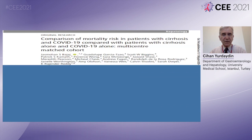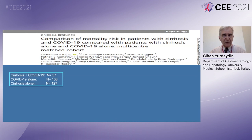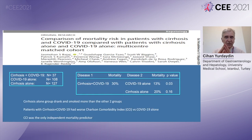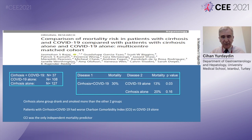One final study I want to mention is from the US — the study from Bajaj — which showed that cirrhosis plus COVID-19, in 37 patients, were compared with 108 patients with COVID-19 alone and 127 with cirrhosis alone. Cirrhosis plus COVID-19 had a 30% mortality, significantly higher than COVID-19 alone at 13%. The cirrhosis alone mortality was 20%, not significantly different from the 30% combined mortality. Importantly, the cirrhosis alone group drank and smoked more. Patients with cirrhosis and COVID-19 had worse Charlson Comorbidity Index versus COVID-19 alone, and the CCI was the only independent mortality predictor.